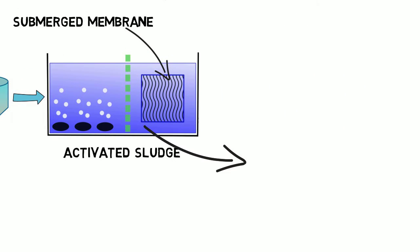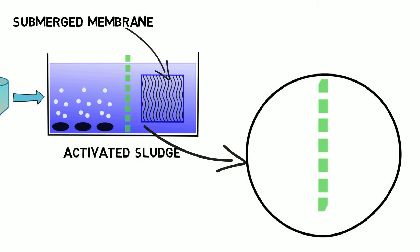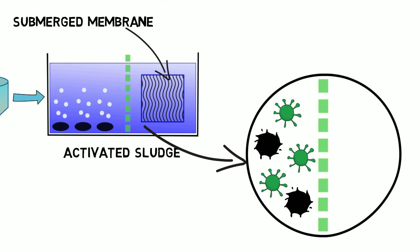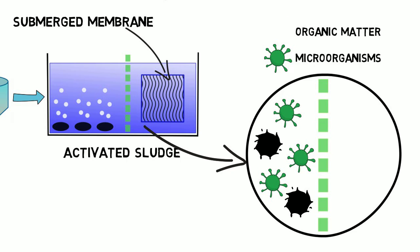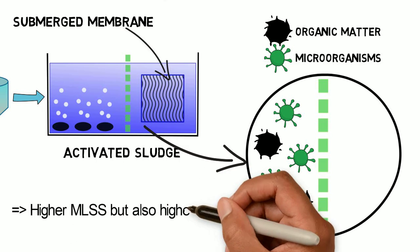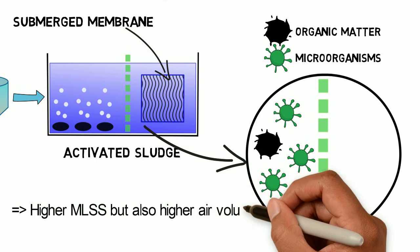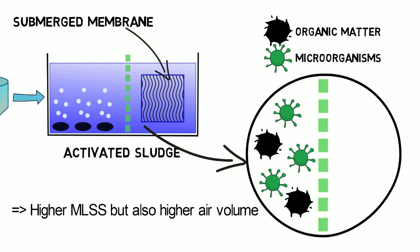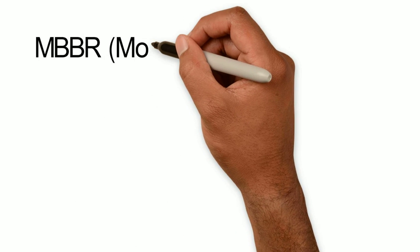Microorganisms digest the organic matter in sewage under consumption of oxygen. As the membrane retains the microorganisms and organic matter in the basin, higher MLSS concentrations are achieved. The high microorganism content requires an immense air volume — not only for oxygen supply, but also to produce enough mixing, scouring of the membranes, and to limit fouling.